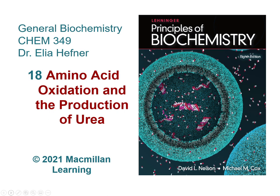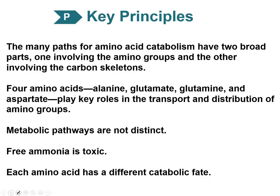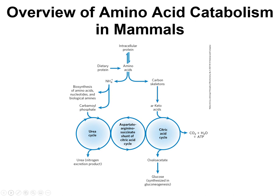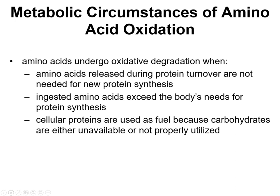Welcome back to general biochemistry lecture. We're covering chapter 18, which is on amino acid oxidation and the production of urea. Here are the key principles for the chapter — make sure you read them over, understand the concepts, and can expand on them. This is an overview of amino acid catabolism in mammals; it's a really good figure to jog your memory as you talk through the details of the chapter. We're going to cover everything on this slide except for the citric acid cycle, because we already did that.